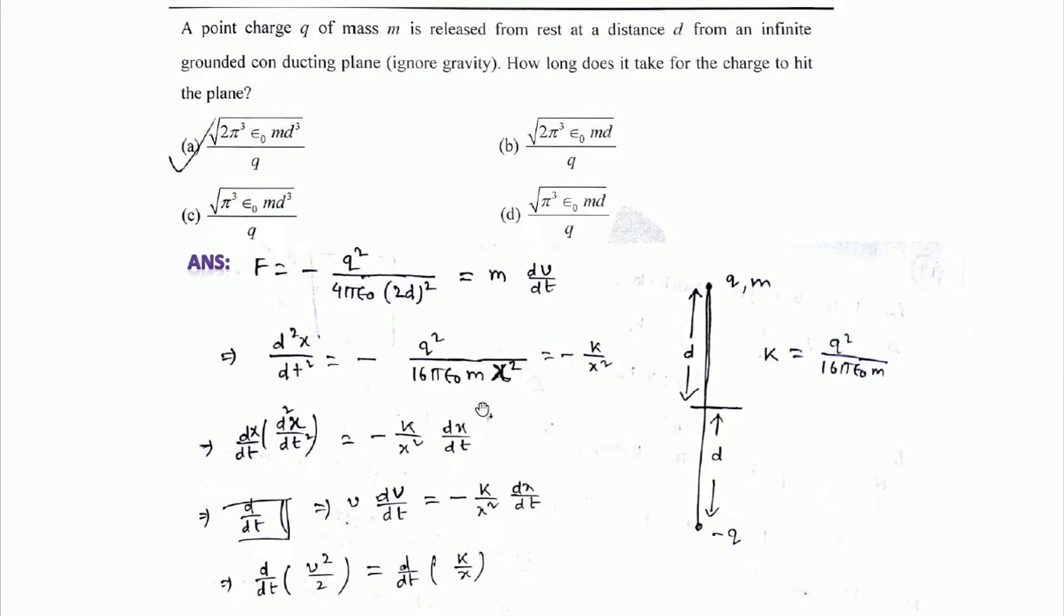This term q² / (16πε₀m), this constant term we are writing as k. So this becomes minus k/x².